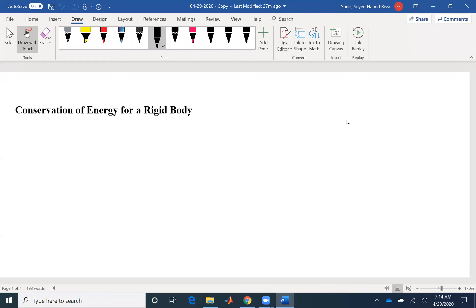Hello everyone. Today we are going to talk about conservation of energy for a rigid body. As the name suggests, we use conservation of energy when energy is conserved. The equation for conservation of energy falls under the umbrella of work and energy. It's a very special case of work and energy.